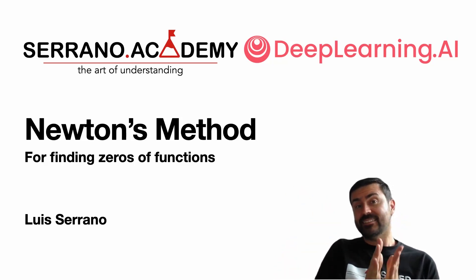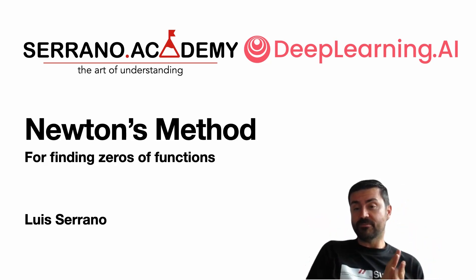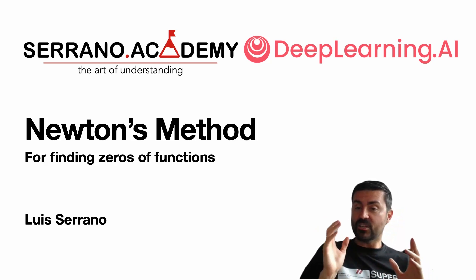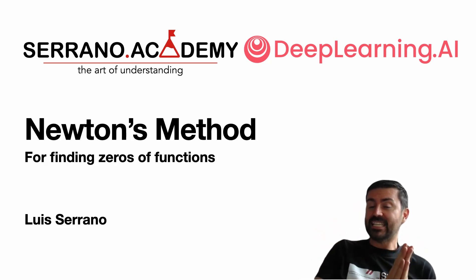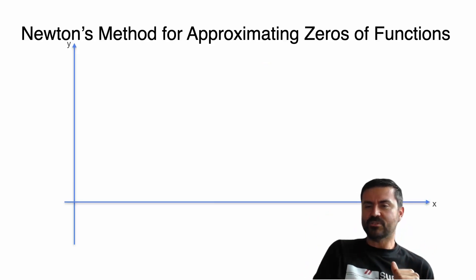Hello, my name is Luis Serrano and this is Serrano Academy and Deep Learning AI. Today we're going to learn about Newton's method for finding zeros of functions. This video is done in collaboration with Deep Learning AI because I have a course there called Math for Machine Learning Specialization, and this is material from that course. I will tell you more about this specialization and the three courses later, but let's get to Newton's method.